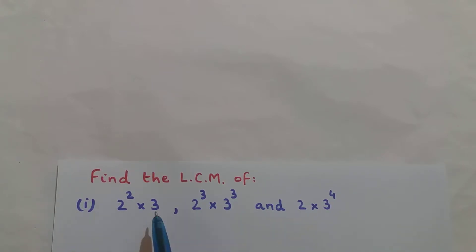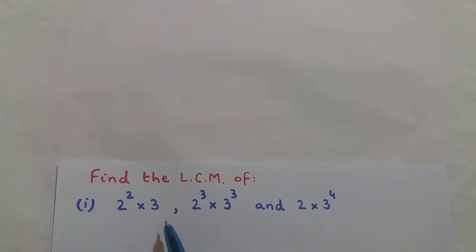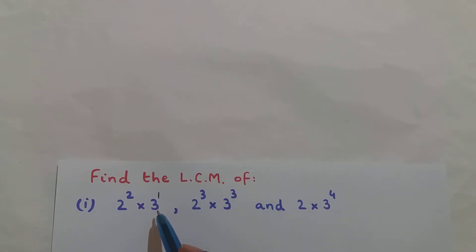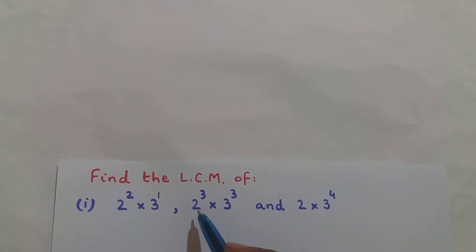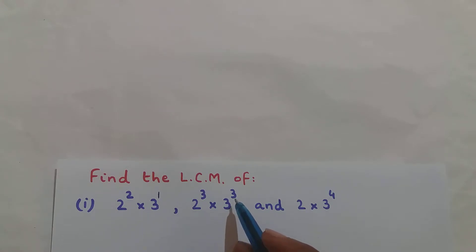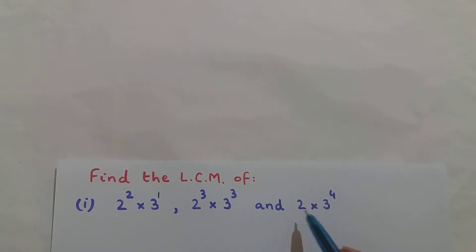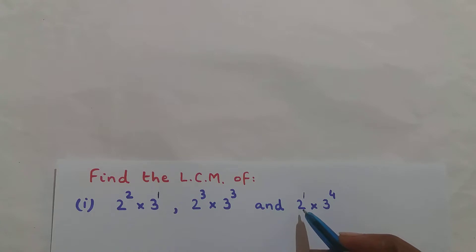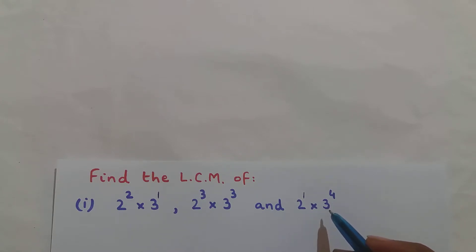In these expressions, the bases are prime numbers. In the first expression: base 2 is prime, and 3 can be written as 3¹ so base 3 is prime. In the second: base 2 is prime and base 3 is prime. In the third: 2 means 2¹ so base 2 is prime, and base 3 is prime.